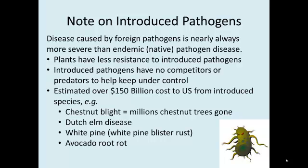One important thing to know: many introduced pathogens are some of our worst invasive species. As invasive disease species, they often affect local plants that have not been exposed to them, so they're not resistant to the introduced pathogens. Additionally, pathogens usually have no competition or predators to help keep them under control. Hundreds of billions of dollars have been spent in the U.S. from introduced pathogens. We lost all our chestnuts from an Asian chestnut blight disease, we lost all our elm trees from a disease brought in from Europe, white pine blister rust has wiped out millions of white pines, and avocado plantations have been lost to a foreign disease. Those are just four examples of dozens of truly tragic and expensive situations that have arisen by nonchalant transfer of biological materials from one continent to the next.